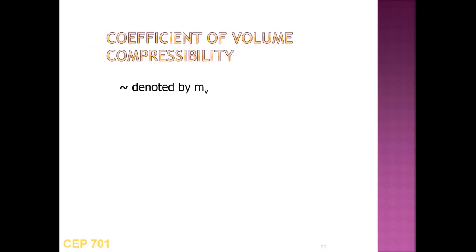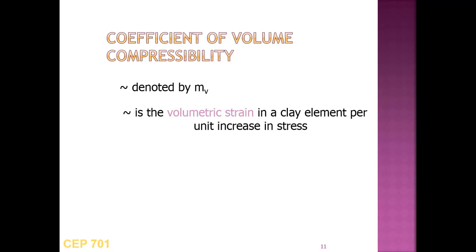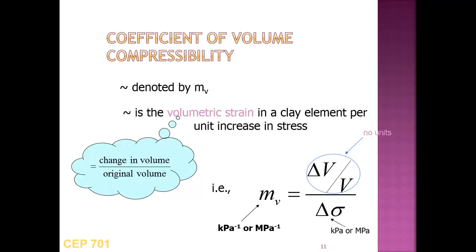The coefficient of volume compressibility, denoted Mv, is defined as the volumetric strain in a clay element per unit increase in stress. Its units are kPa⁻¹ or MPa⁻¹. It is expressed as (delta V / V) divided by delta sigma — the change in volumetric strain per unit increase in stress.